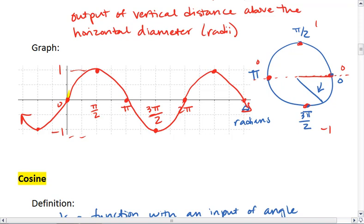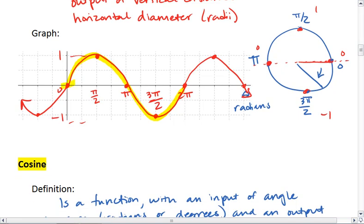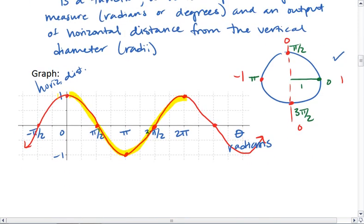They both complete one full rotation in 2 pi radians. So it takes 2 pi until they start to repeat. The only difference is sine starts at a midpoint and goes up. Cosine starts at a max. Know that difference.